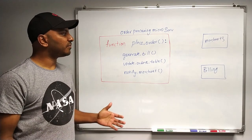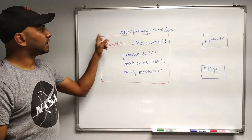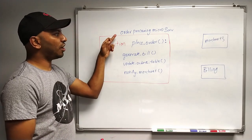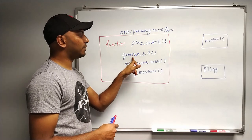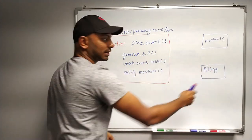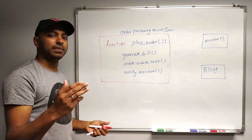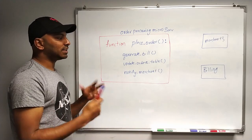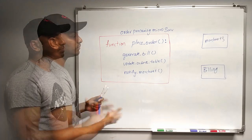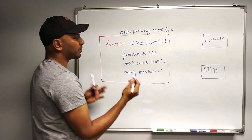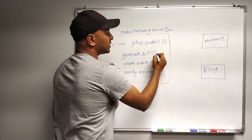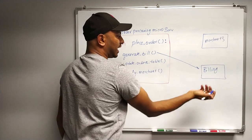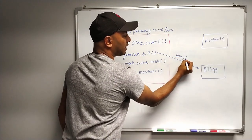In microservices, when a user places an order, the order processing microservice needs to generate a bill. Since that is not the order processing microservice's responsibility, it must somehow communicate to the billing microservice. We can do this in two ways: one is based on HTTP and the other is an RPC call. These are the two most preferred approaches because of their simplicity and usability.